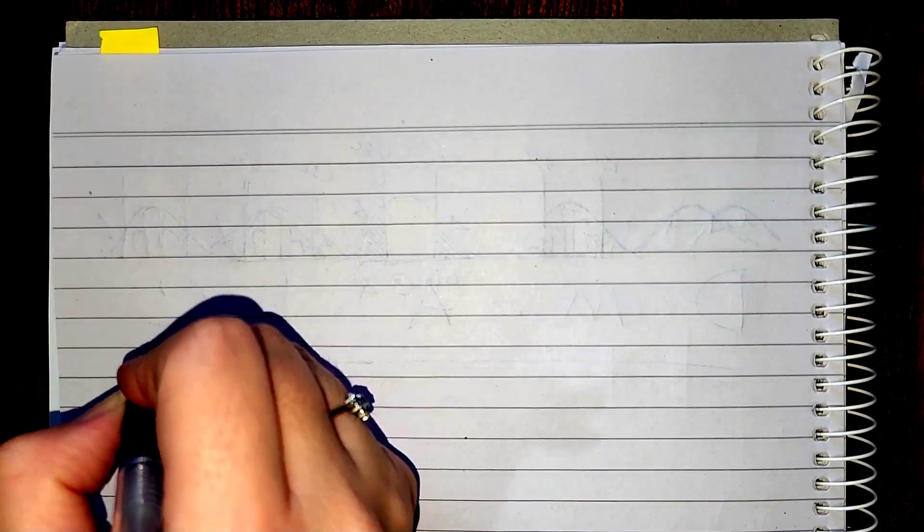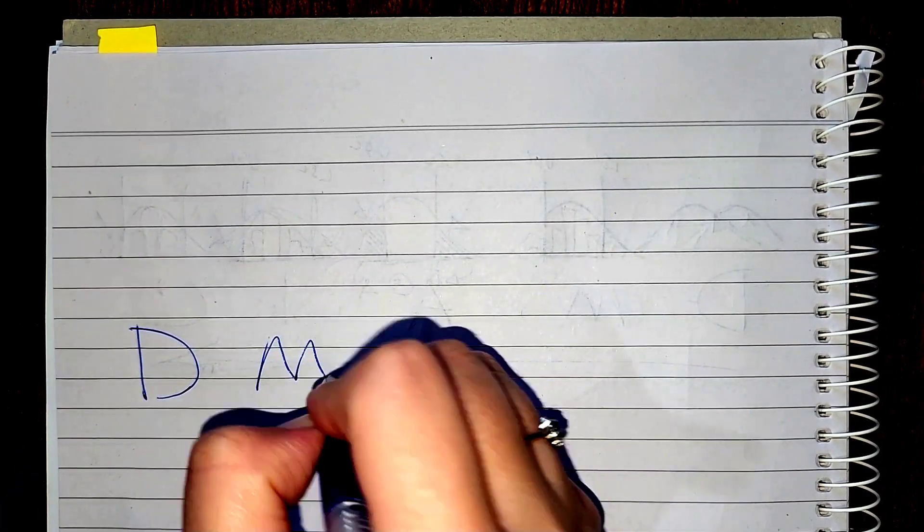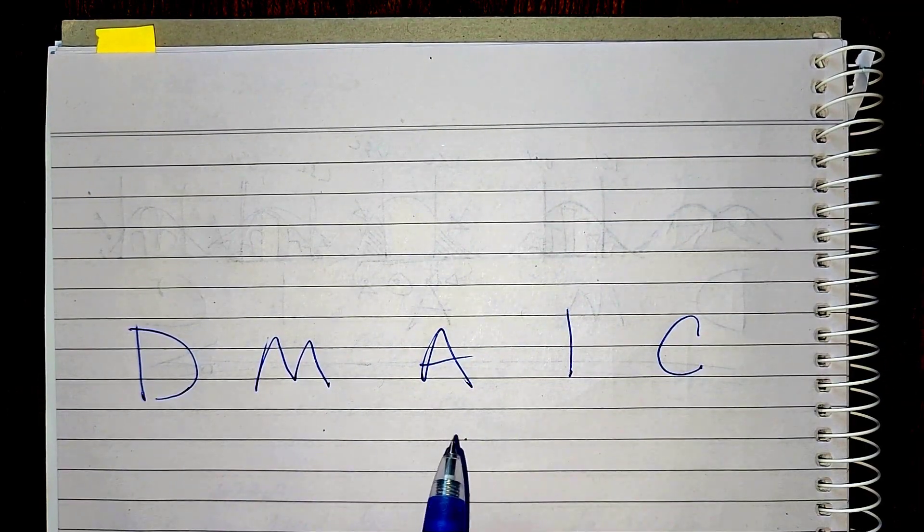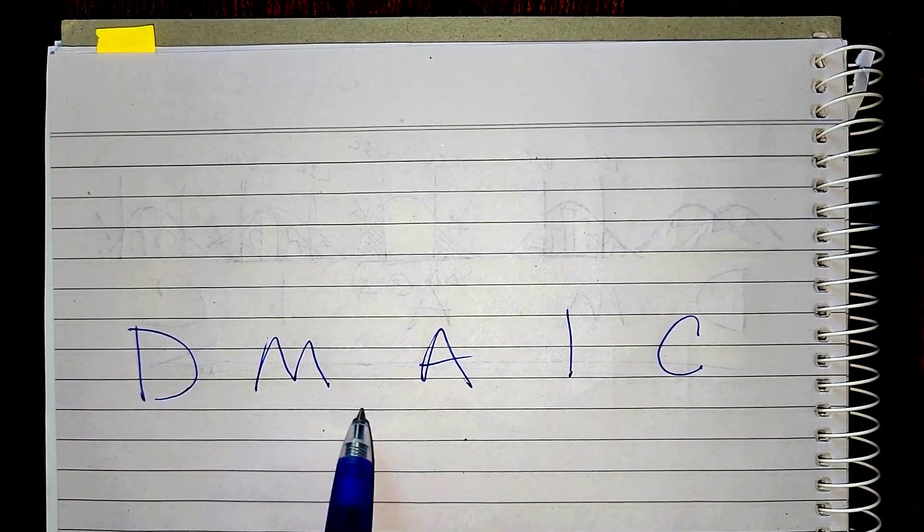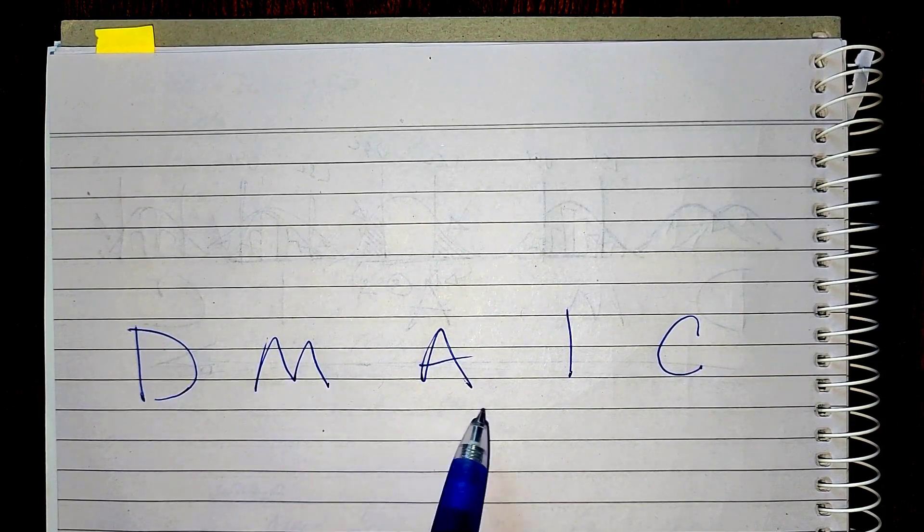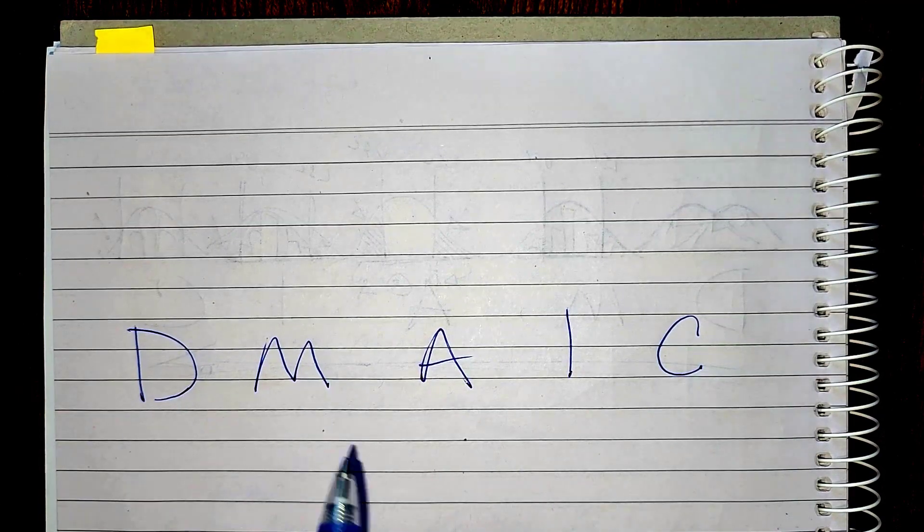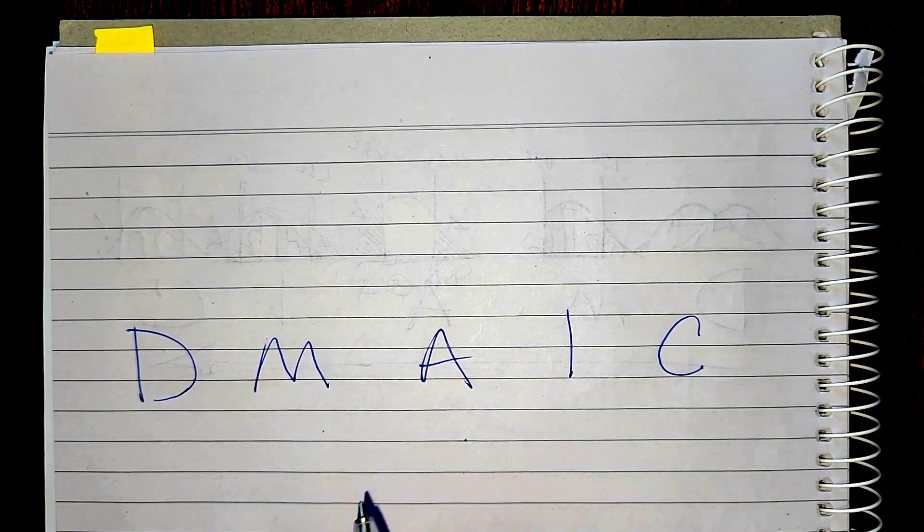So let's talk a little bit about DMAIC. DMAIC is a structured problem-solving tool that we use in Six Sigma to solve really complex problems, things that are existing processes that we don't know the solution to. Problems in our existing processes that we don't know our solution to.